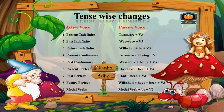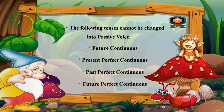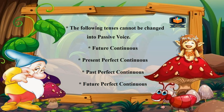For modal verbs, use the same modal verb in passive voice as in active voice, but add 'be' + past participle. Note that some tenses cannot be changed into passive voice: future continuous, present perfect continuous, past perfect continuous, and future perfect continuous. So only eight tenses can be changed into passive voice.